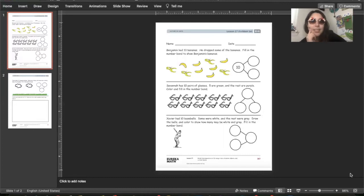Next, Savannah has 10 pairs of glasses. 5 are green and the rest are purple. Color and fill in the number bond. So, you just need to color 5 green and the rest purple, and you have all the information for your number bond.